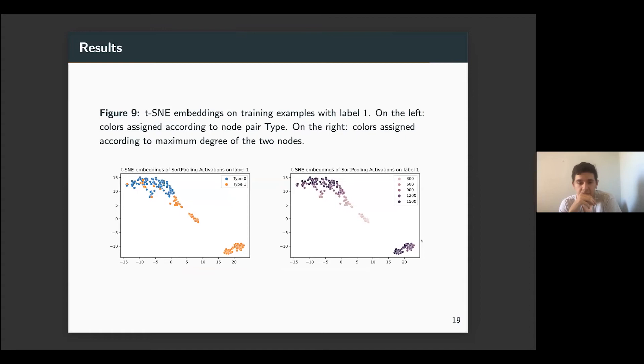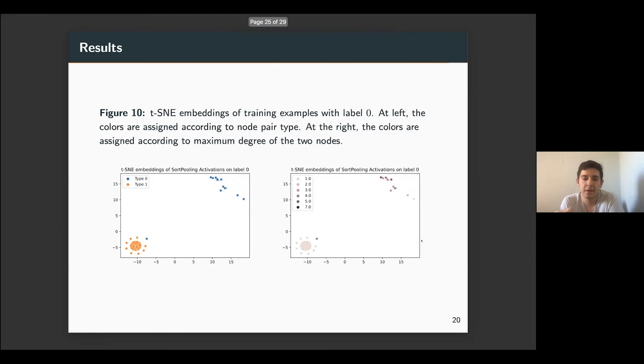So for a multi-visualization, we compute the 2D embeddings of the activations. For label 1, on the left, we differentiate the color by type. So it's clear that the network is making a differentiation for each type. There are clusters. On the right, you can see the same embeddings, but with the color representing sort of the number of nodes that had the subgraph. So it's really interesting that the fewer nodes the subgraph has on type 1 links, the closer it is to the type 0 cluster for the network. The same is shown, but for examples with label 0. We can see again a differentiation.